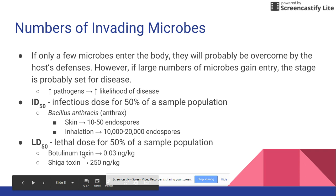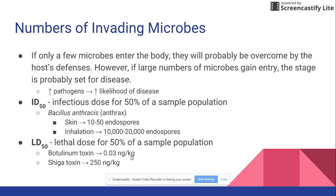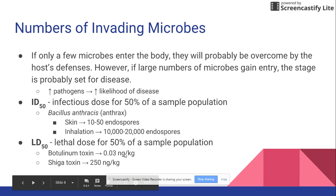Looking at botulinum toxin, which causes botulism, and shigella toxin, we can compare their LD50 values. Botulinum toxin is 0.03 nanograms per kilogram, while shigella is 250 in the same units. Since both are in the same units, we can see that a lot less of the botulinum toxin has to get into your body to cause death compared to the shigella toxin.